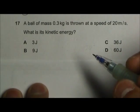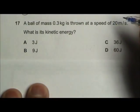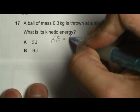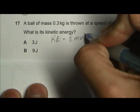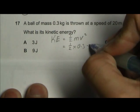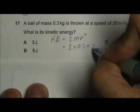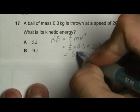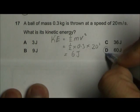This is a recall question, so we just need to use the formula KE equals half mv squared. So we will get half times 0.3 times 20 squared and we will get 60 joules of energy. Answer B.